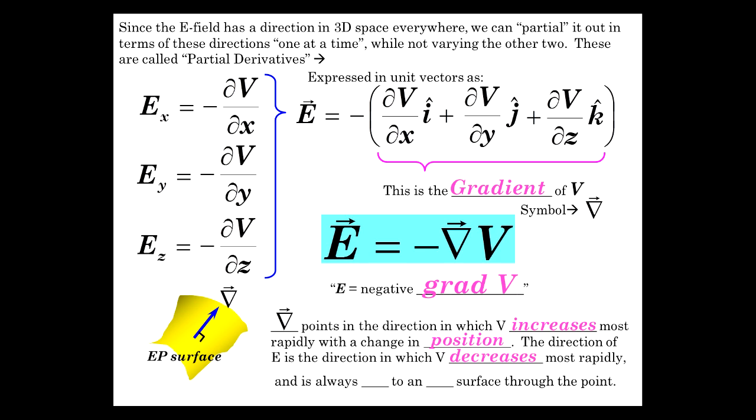So the direction of E is the direction in which V decreases, and it's always perpendicular to an equipotential surface through that point, as shown here. Well, this is a fairly abstract idea, just for your conceptual understanding, and keep that in your mental repertoire.